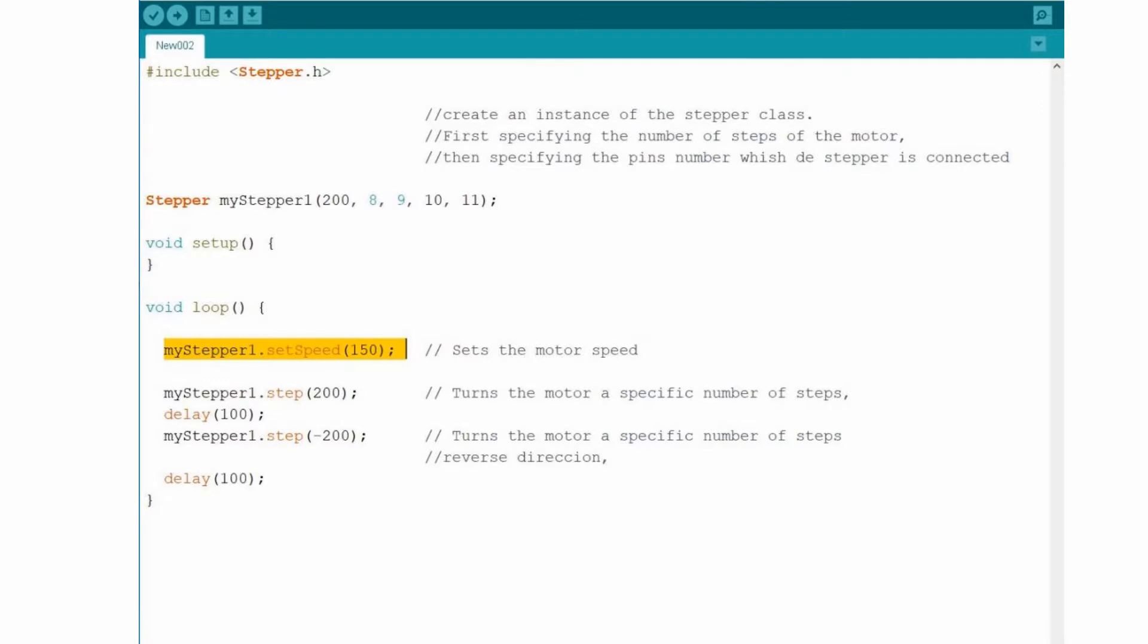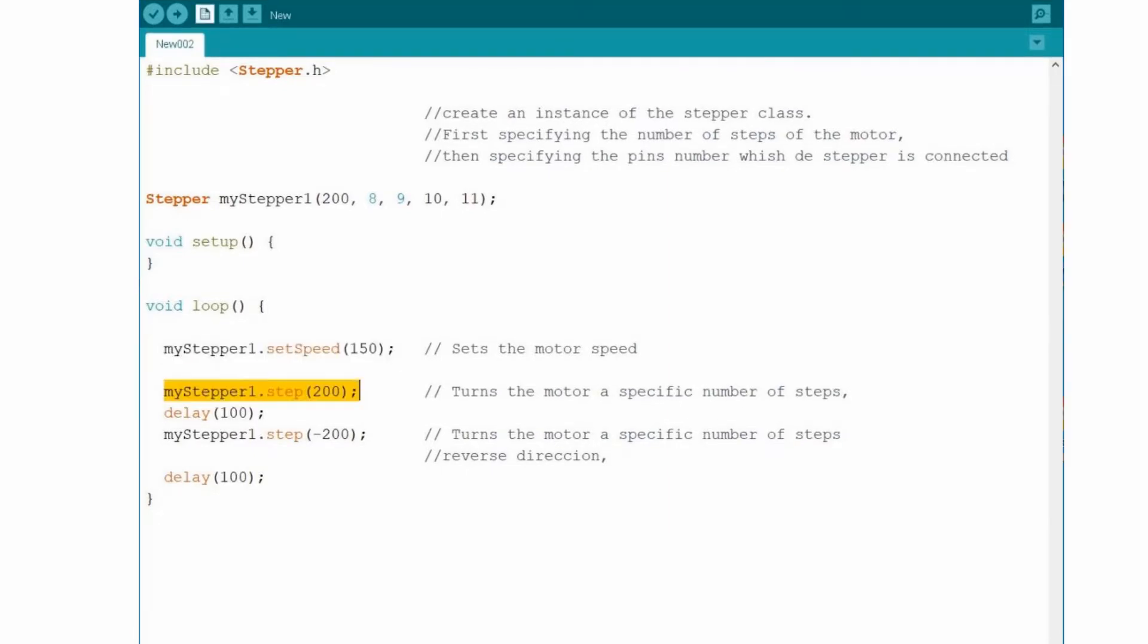Now into the loop, set the speed 150 just to start. This can vary depending on you and your motor. Next, advance 200 steps in the forward direction, which is the same as a complete revolution in my motor.